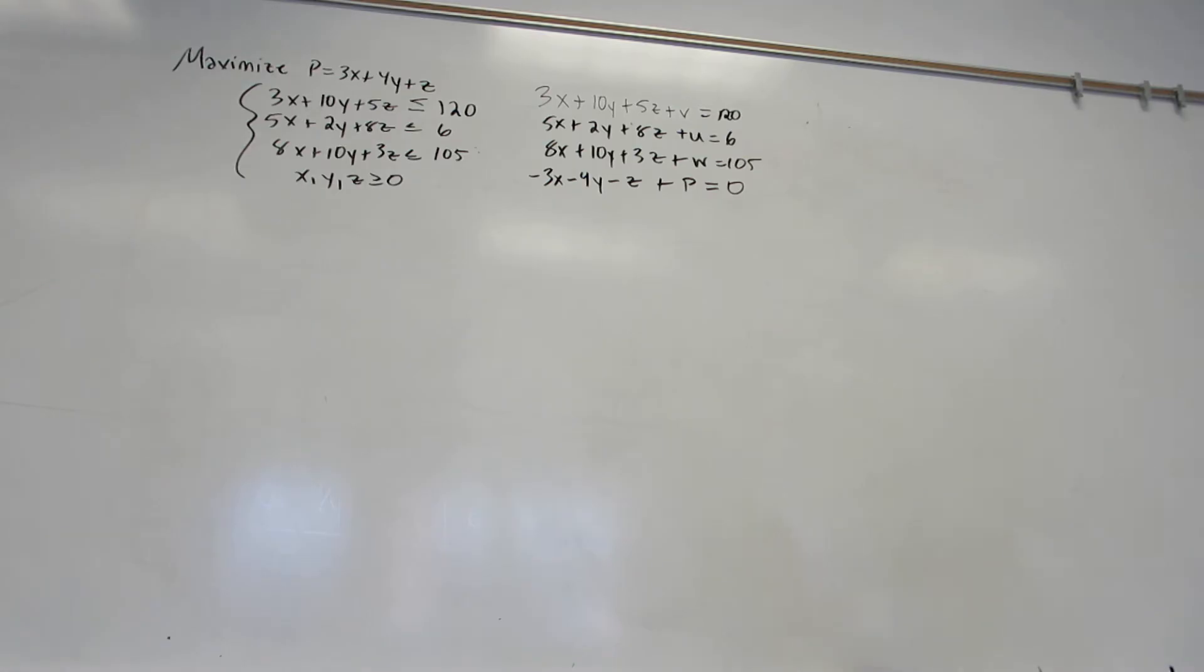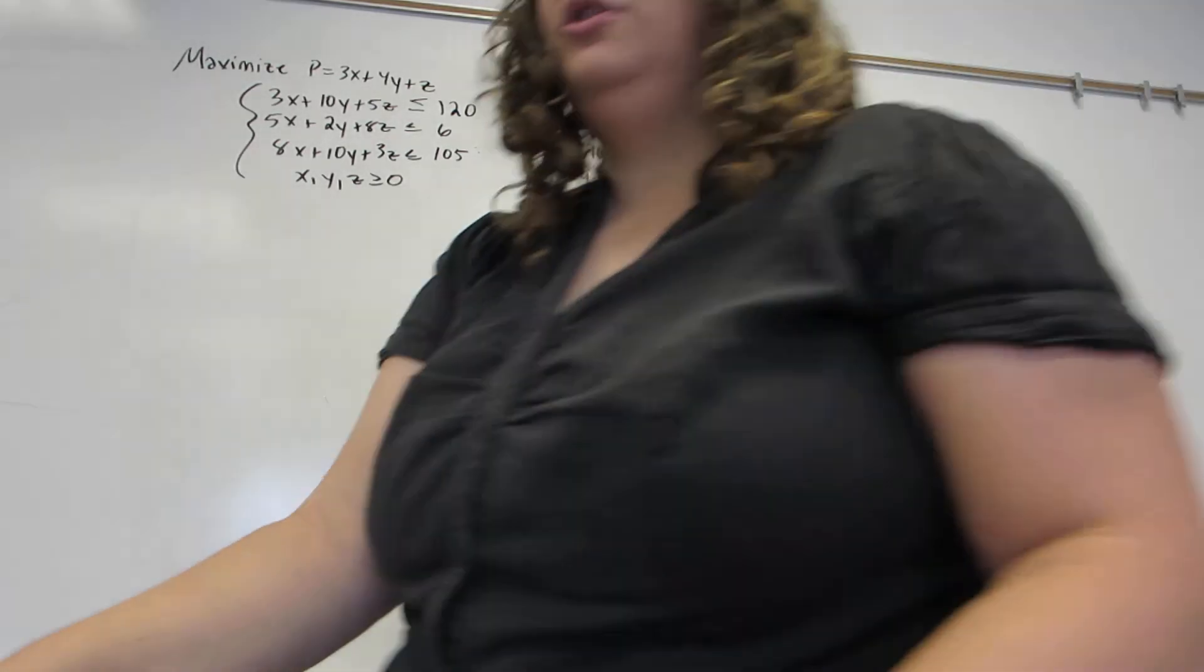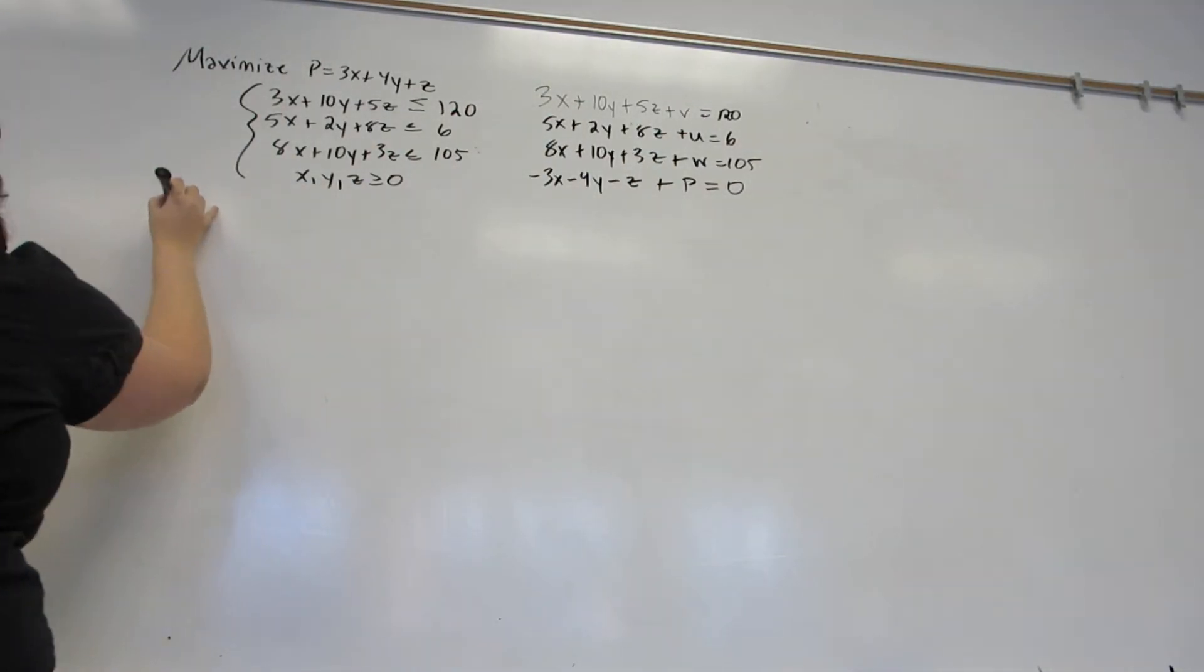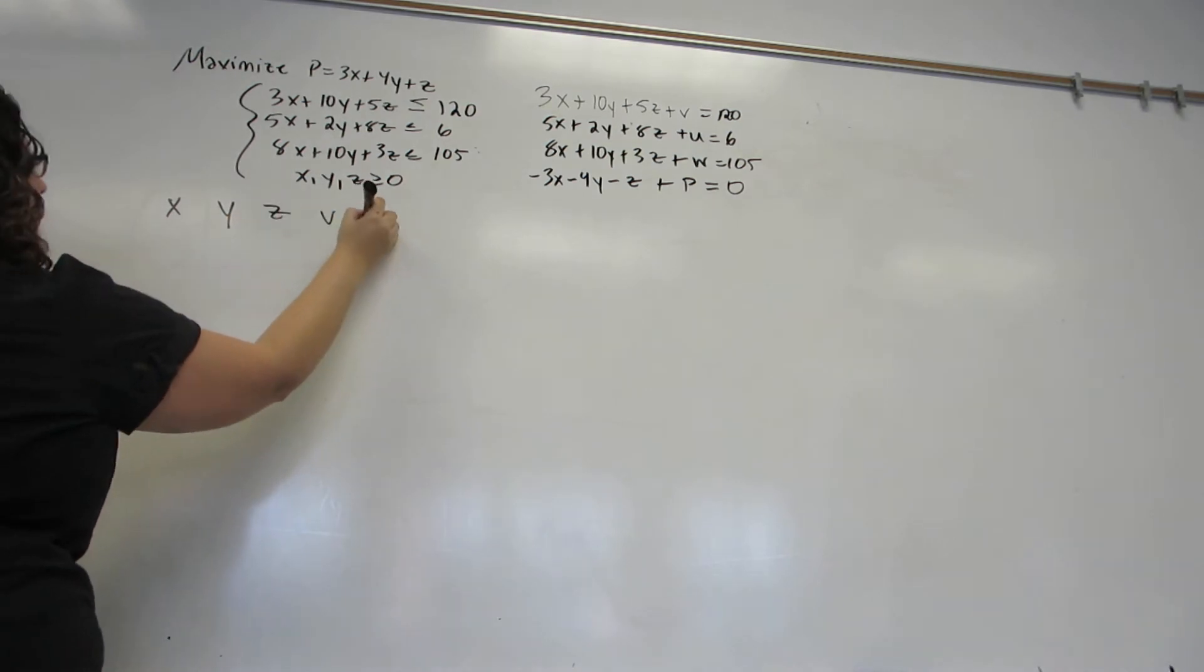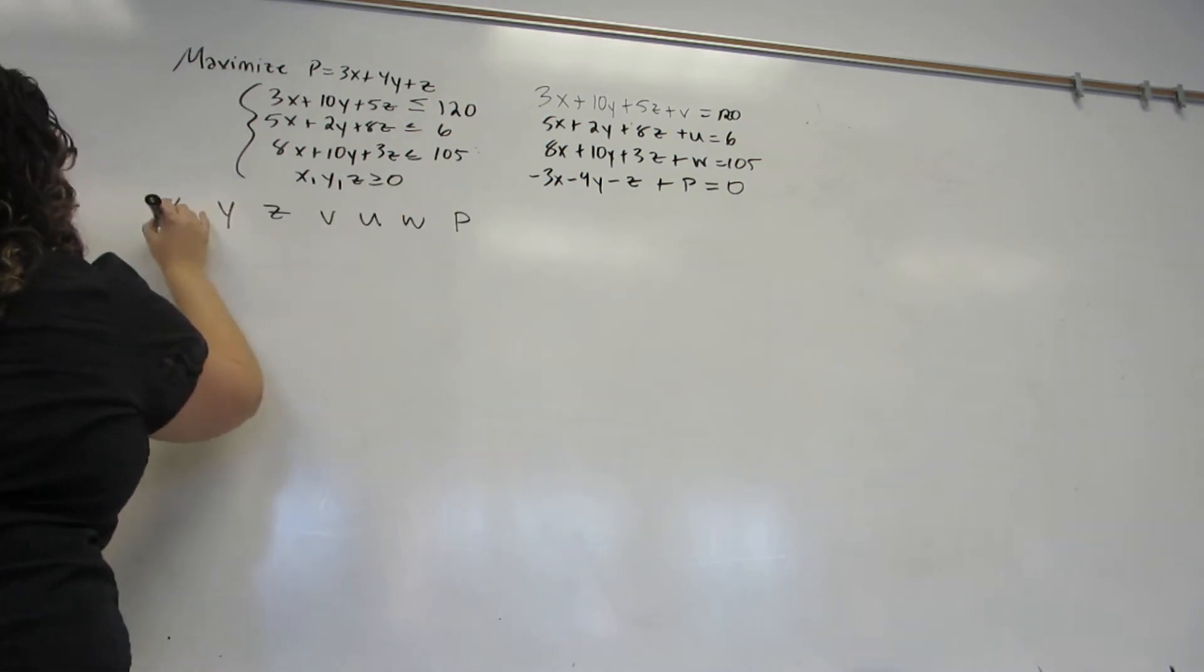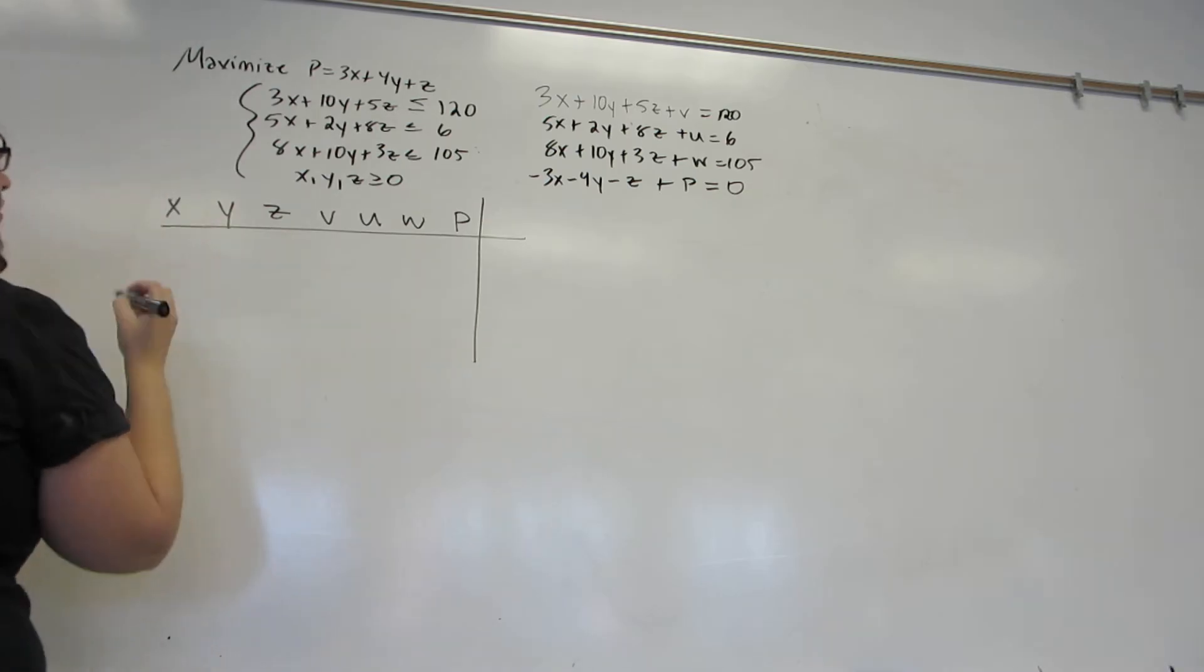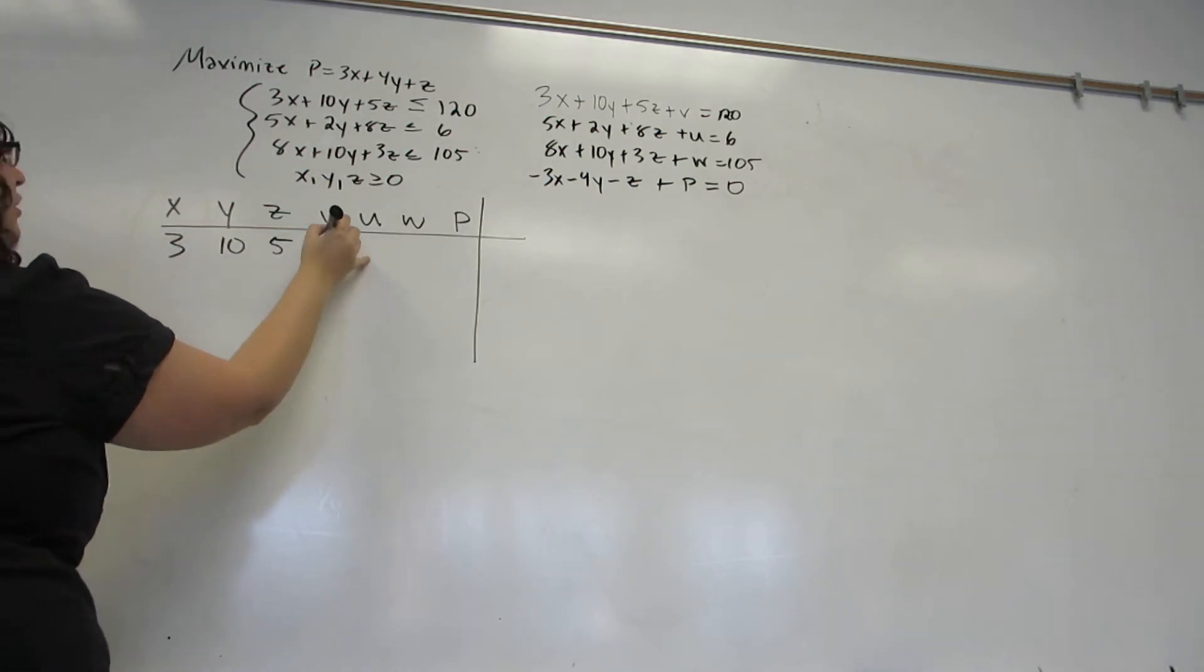Okay, so now I can start my initial setup of the problem. All my variables get listed across the top, and then each constraint has its coefficients turned into a row.